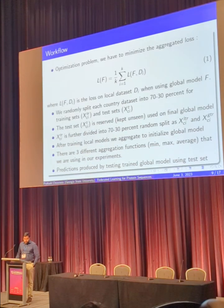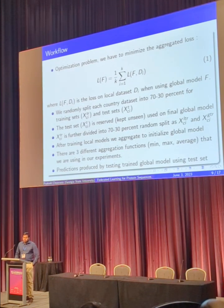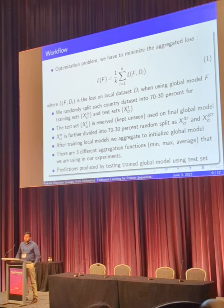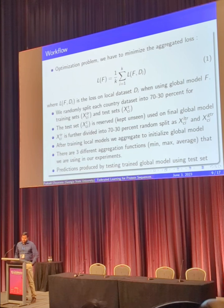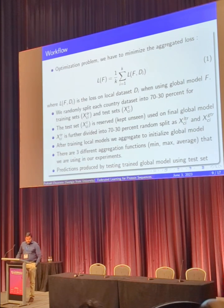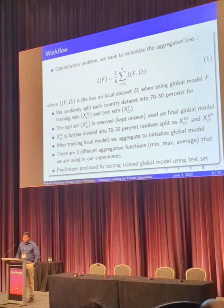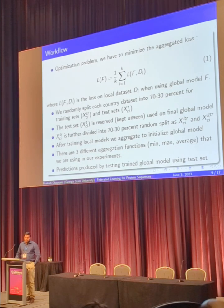The whole problem is optimizing and reducing the loss at the global level. In the equation, K is the number of clients, and we are trying to reduce the loss aggregated after each local point is trained locally and pushed at the global level. We use a 70-30% split first for testing, then another 70-30% for training local and global respectively, and we use three different aggregation strategies.